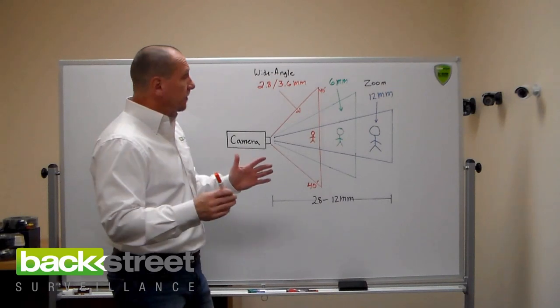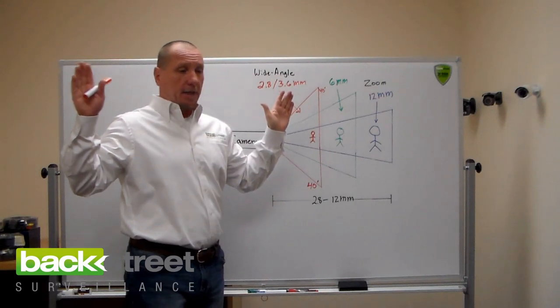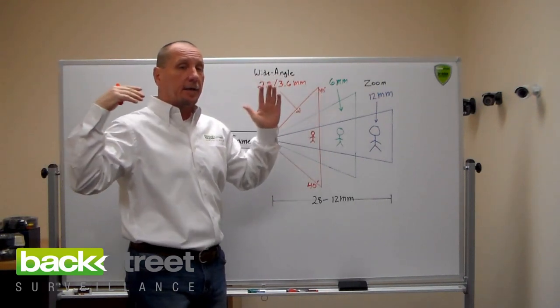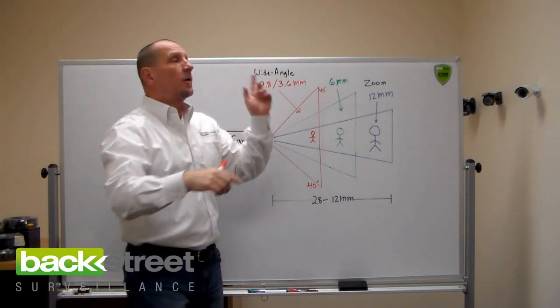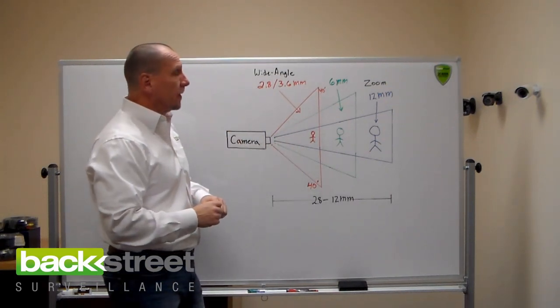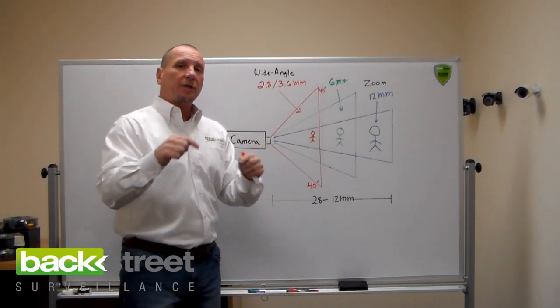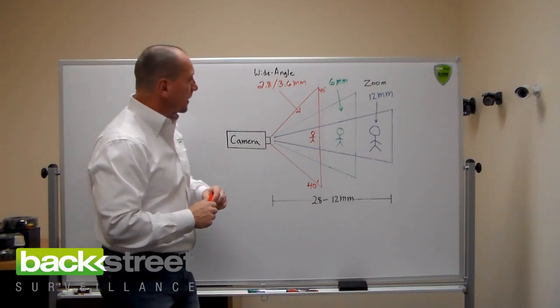So the most cost effective cameras are wide angle cameras. They just have a wide angle lens. You can't adjust them. Once you mount them, it's just seeing what it sees, that's it. And if things are too small far away, you either have to move the camera closer, or you need to get a zoom lens, a camera with a zoom lens on it. So the zoom lenses are built into the cameras. You don't add them on. They're actually integrated right into the cameras, and I'll show you that in a second.